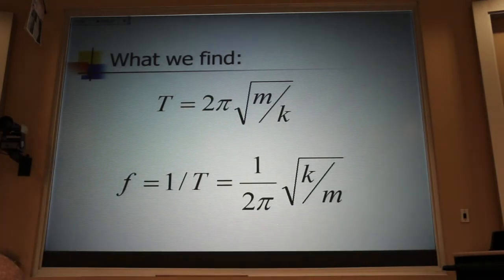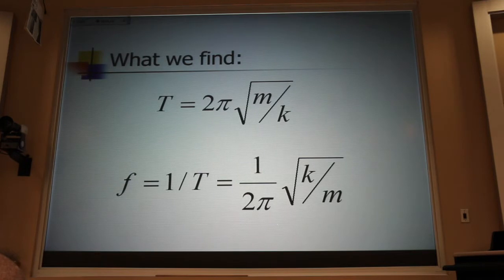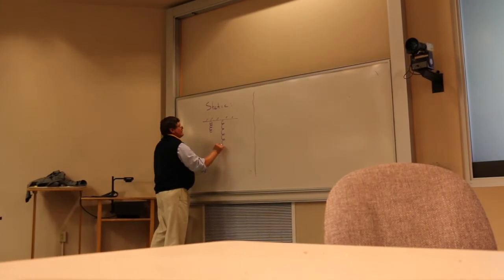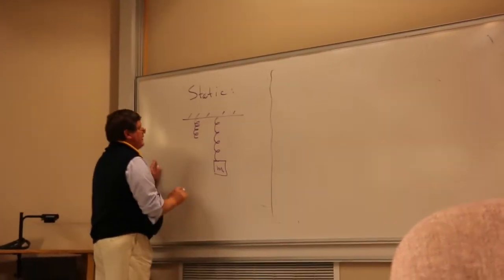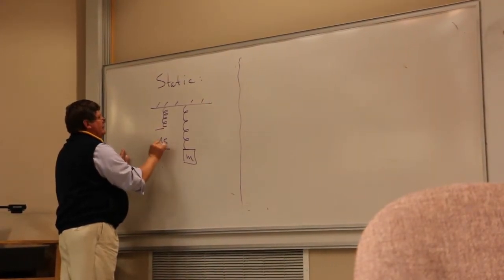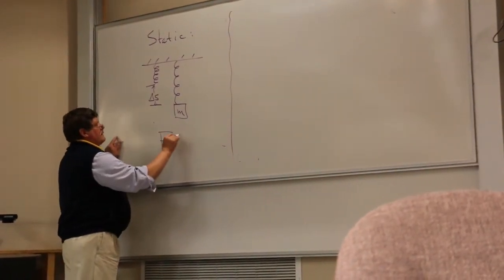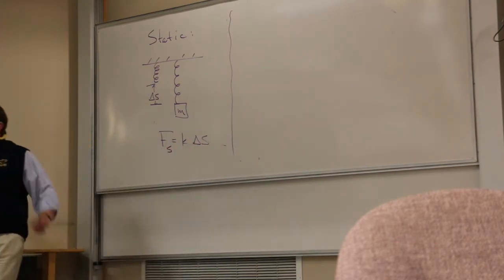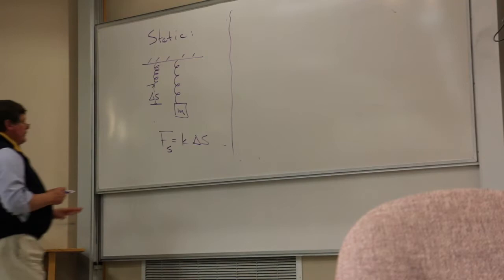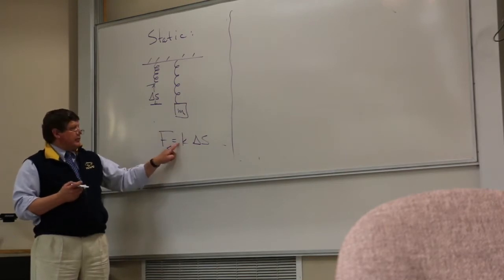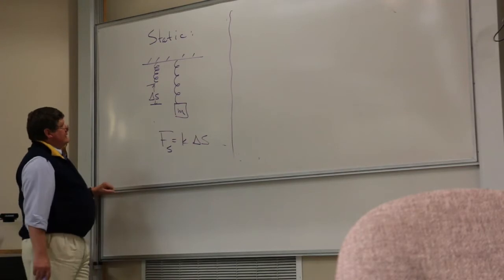When we're trying to find a spring constant, that gives us two ways to go about it. The first way, the 205 method, is called the static method. That method just has you take the spring out of the box from the factory, hang the block on it of mass M, and see how much the spring stretches. And then we use Hooke's Law.